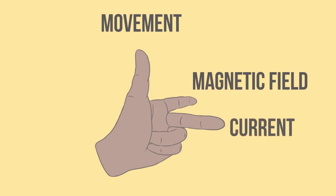Your first finger represents the direction of the magnetic field generated by the permanent magnetic poles from north to south. So, your finger is pointing to the south pole.